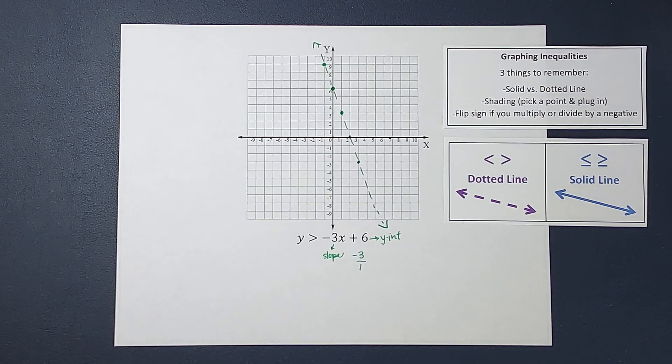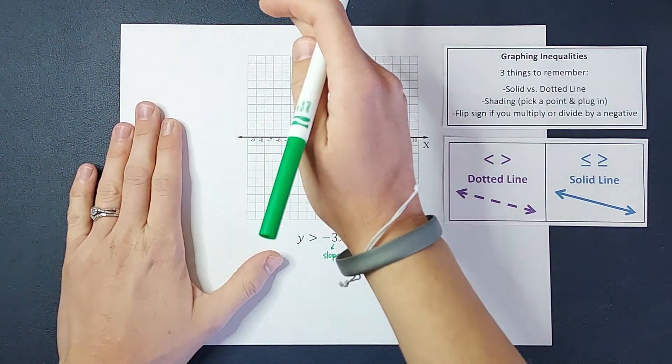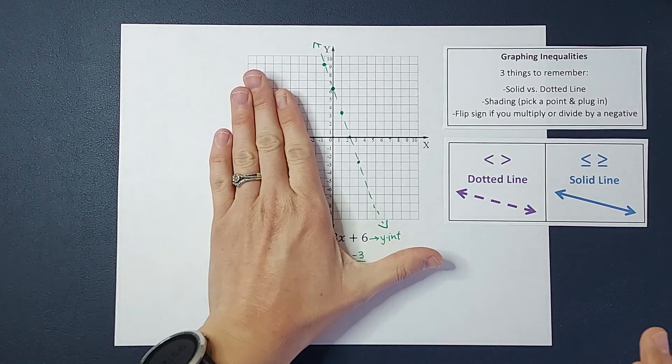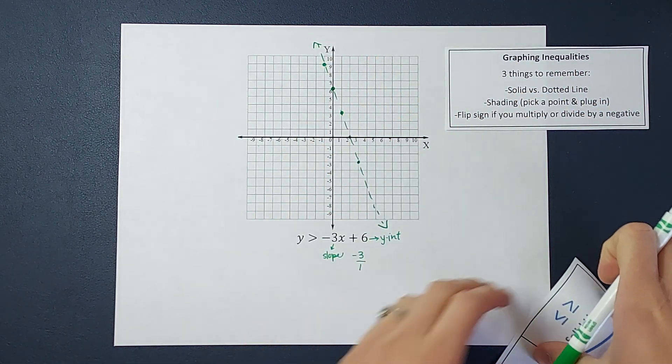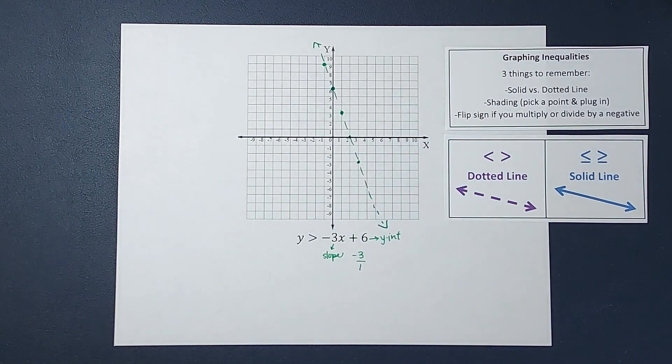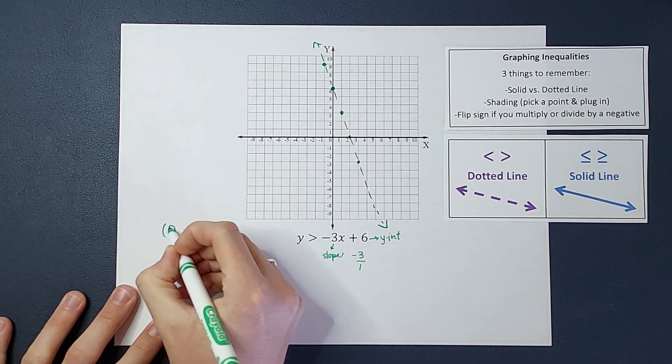The easiest thing to do is we're going to pick a point on either side. We don't want to pick a point along this line, but any point over here or any point over here. So typically the easiest thing to do is to pick 0, 0 if you can, as long as it's not along that line. So I'm going to pick the point 0, 0.